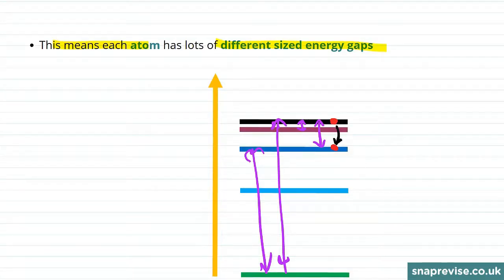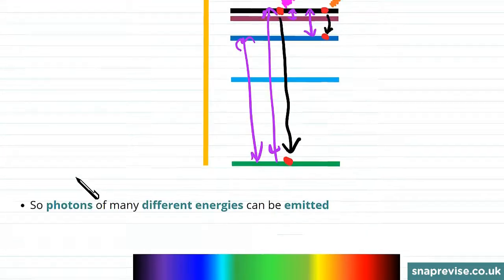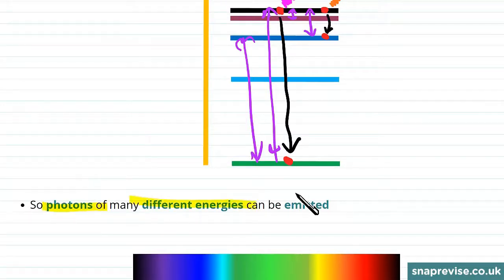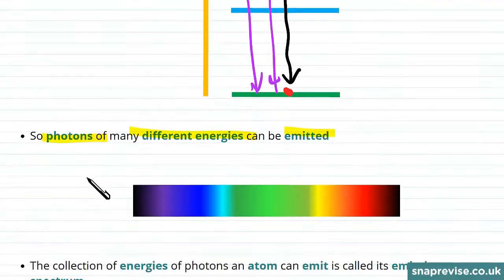If the electron drops down by this gap, it will emit a certain type of photon. If an electron moves across a different gap, it will emit a photon with a different energy. It follows that photons of many different energies can be emitted by a single atom.